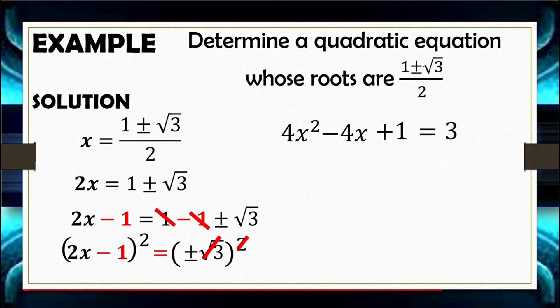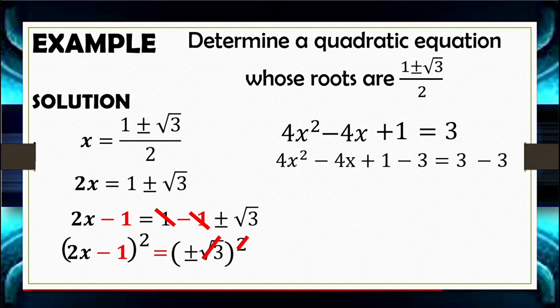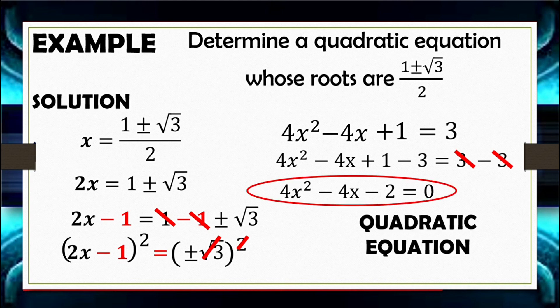The positive and negative symbol is eliminated because squaring either a positive or negative number gives a positive result. Transposing 3 to the left side using the subtraction property of equality, the equation becomes 4X squared minus 4X minus 2 equals 0. This is the quadratic equation whose roots are 1 plus and minus square root of 3 all over 2.